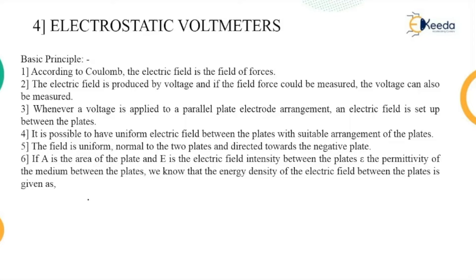Whenever a voltage is applied to a parallel plate electrode arrangement, where we have two plates connected in the network — those plates are parallel to each other — an electric field is set up between the plates. It is possible to have a uniform electric field between the plates with suitable arrangement. The field is uniform, normal to the two plates and directed towards the negative plate.